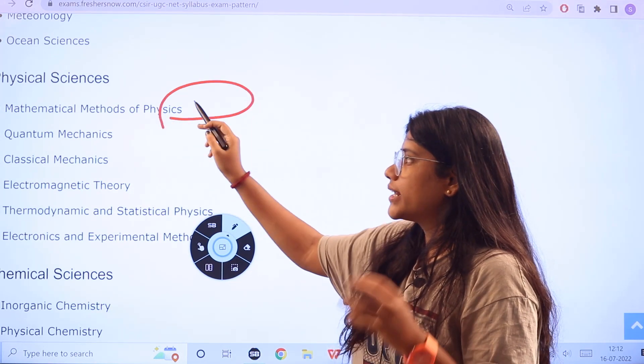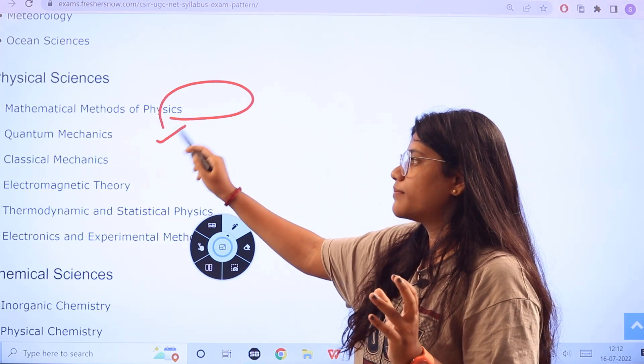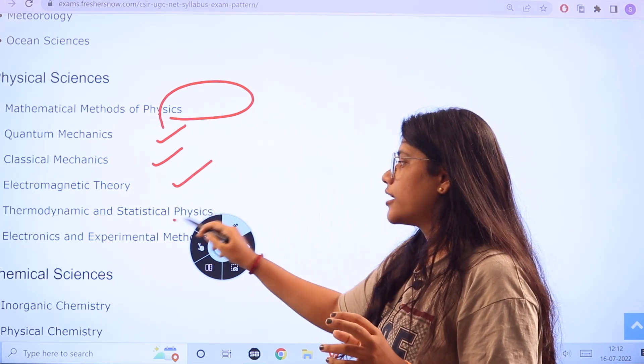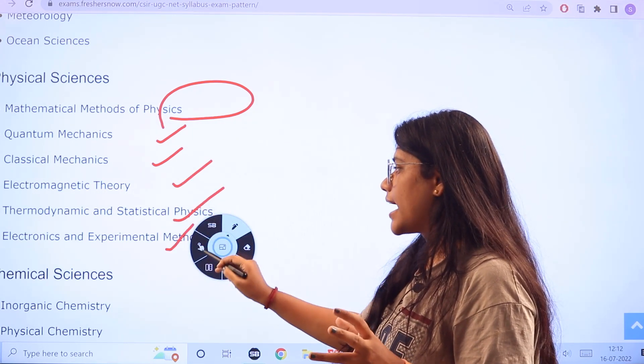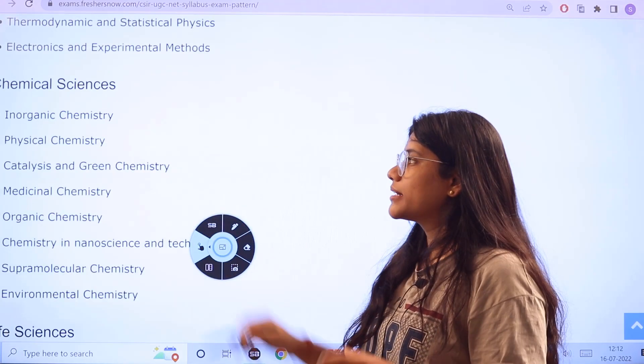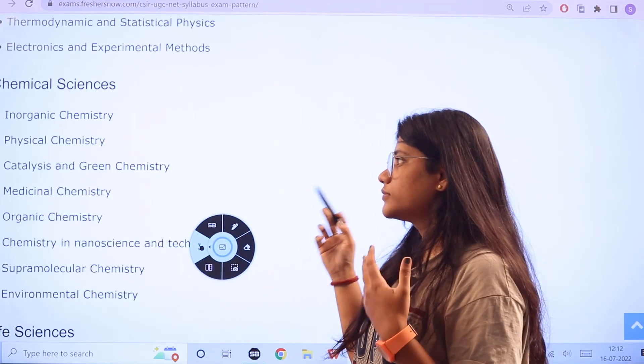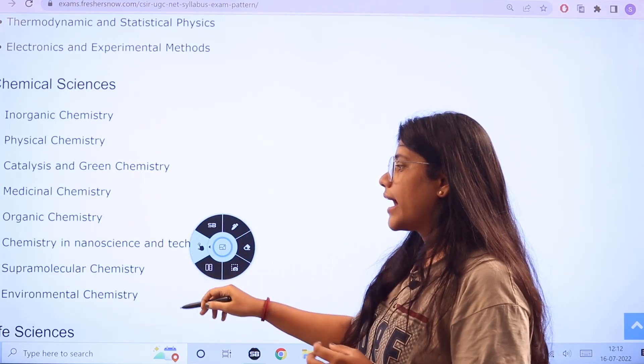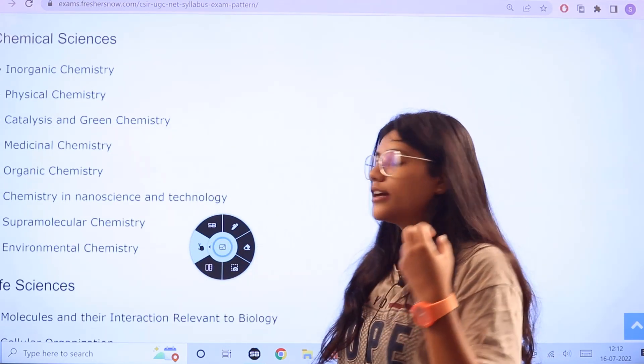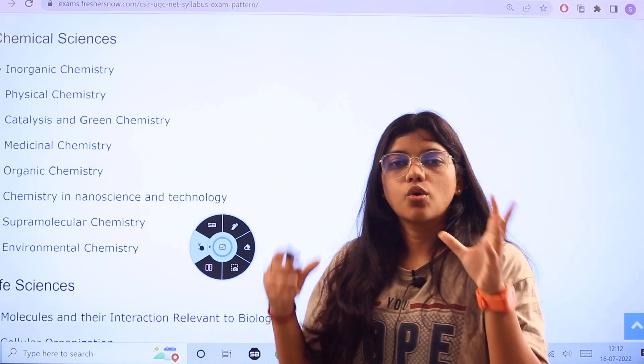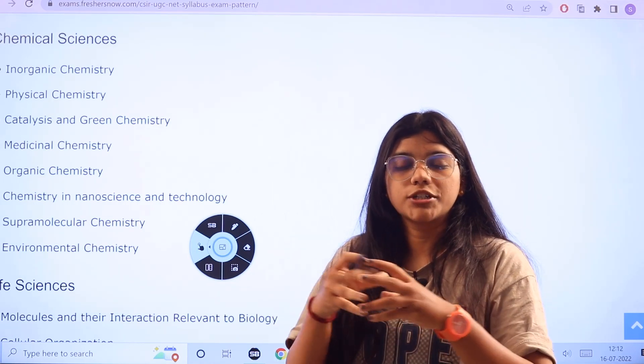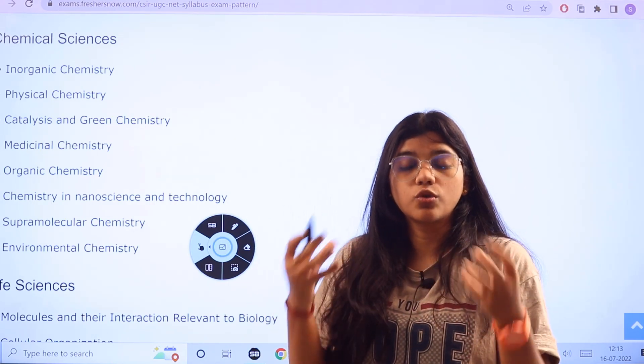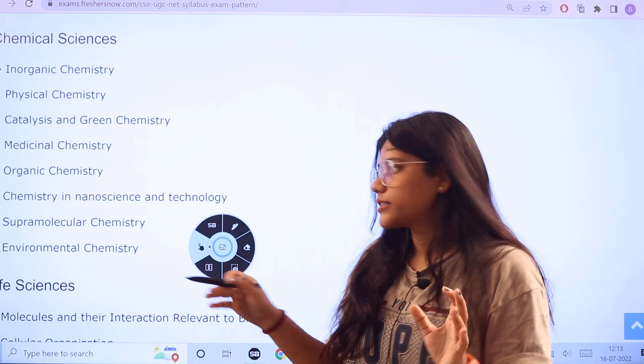For physical sciences, the first one is Mathematical Methods of Physics, Quantum Mechanics, Classical Mechanics, Electromagnetic Theories, Thermodynamic Statistical Physics, Electronics and Experimental Methods. For chemical sciences, you have Inorganic Chemistry, Physical Chemistry, Catalysts and Medicinal, Organic, Inorganic, Environmental, Supramolecular Chemistry. So one such core which is divided into different sectors or different routes which is having its own sub-relevant topics.